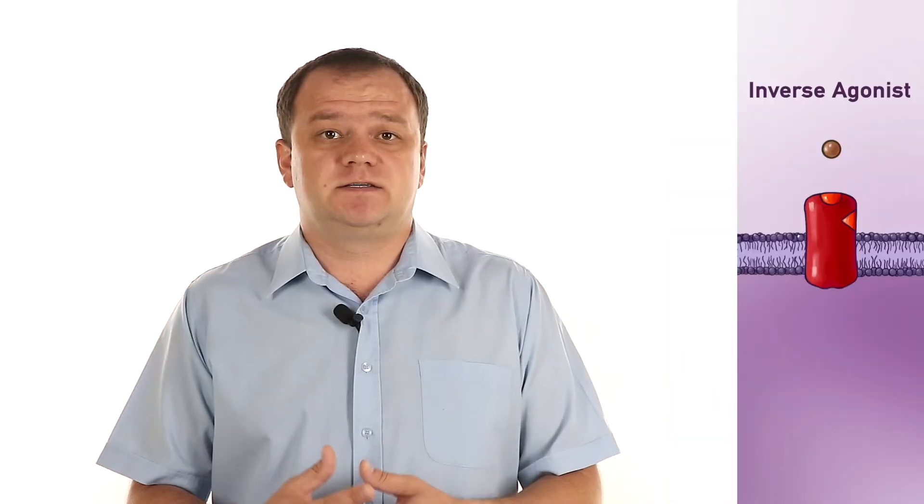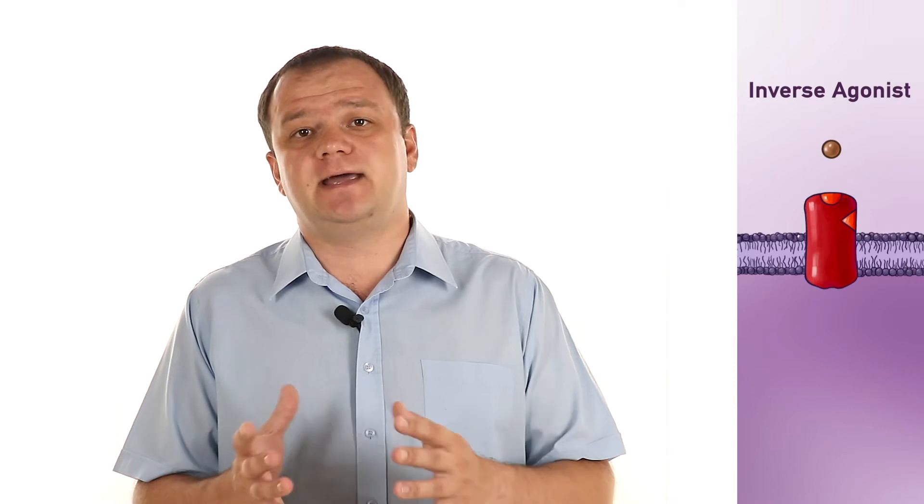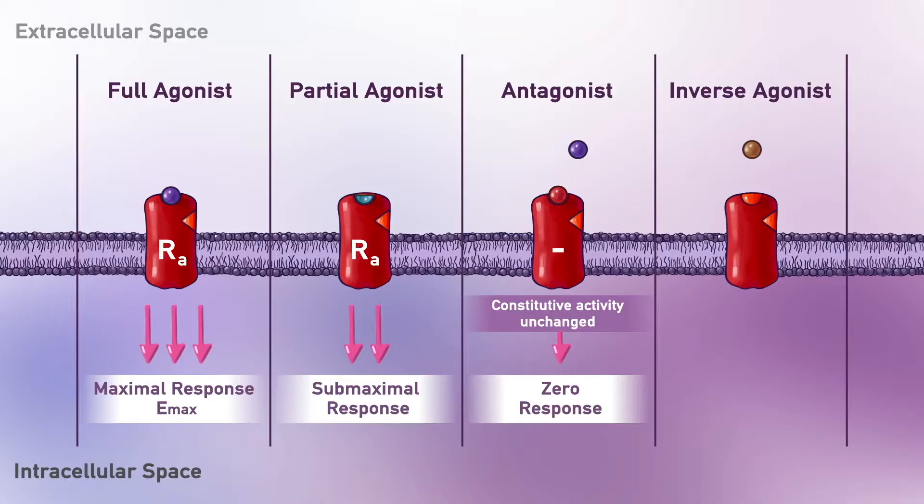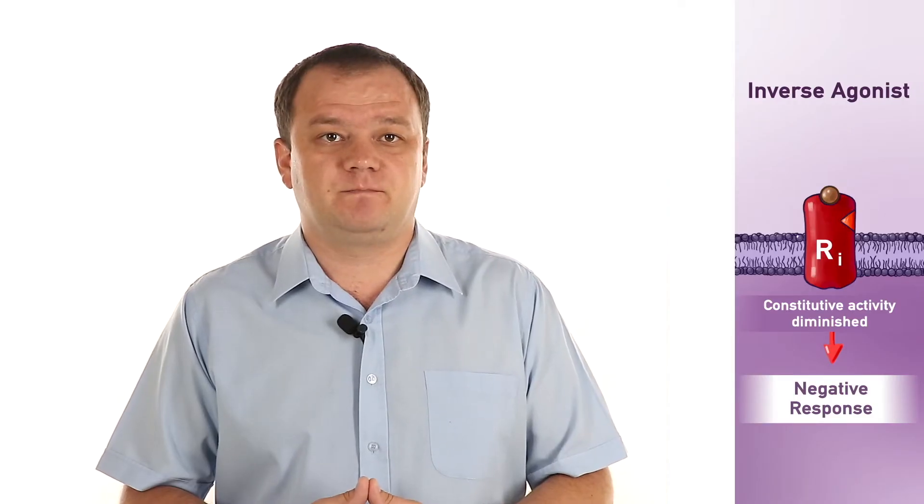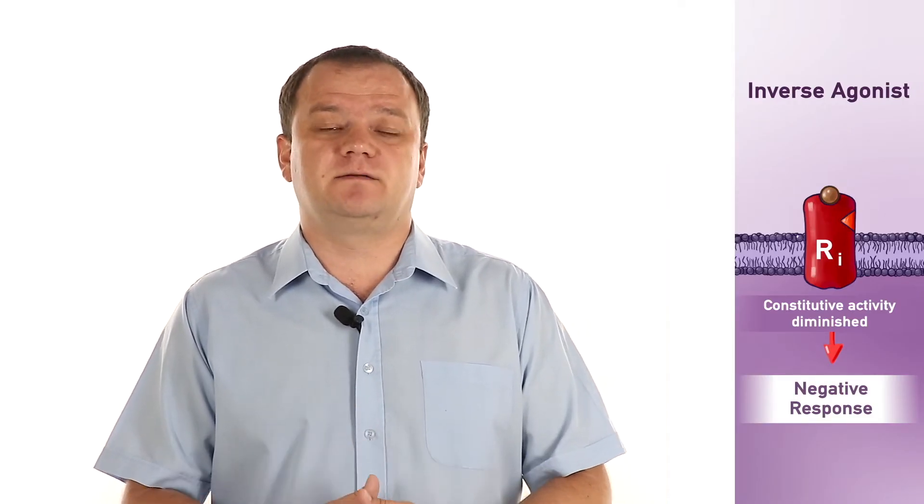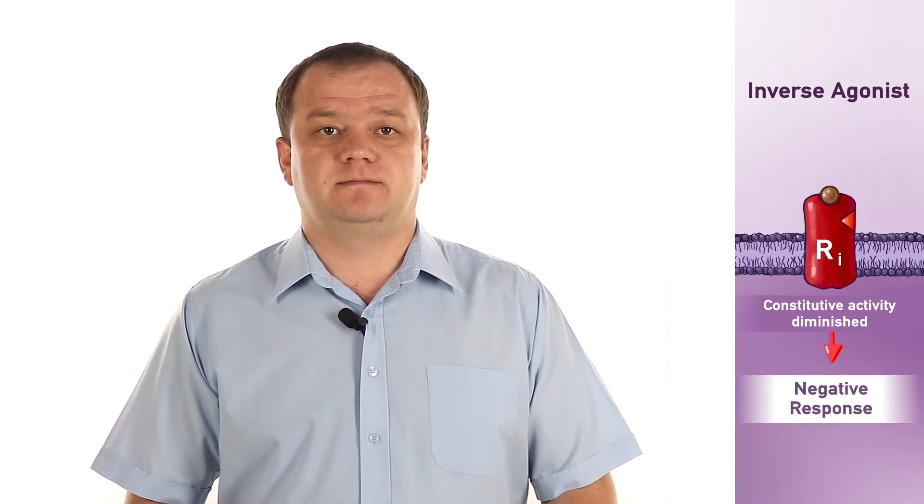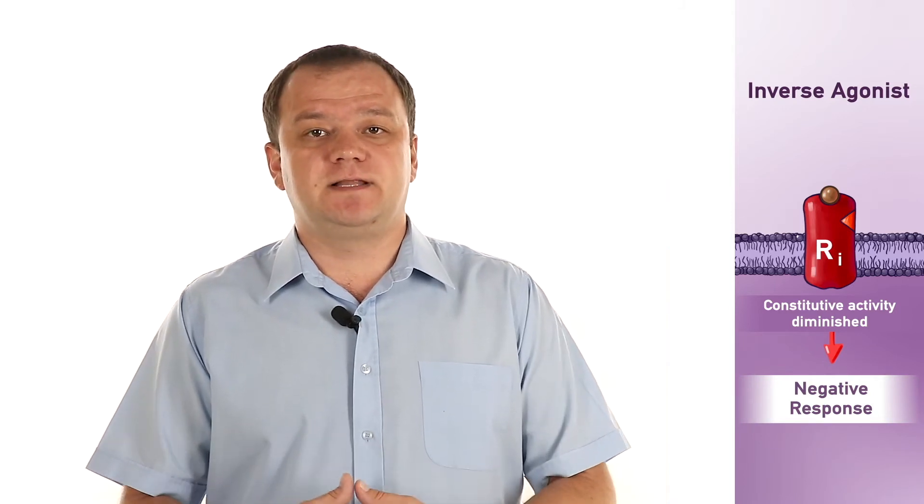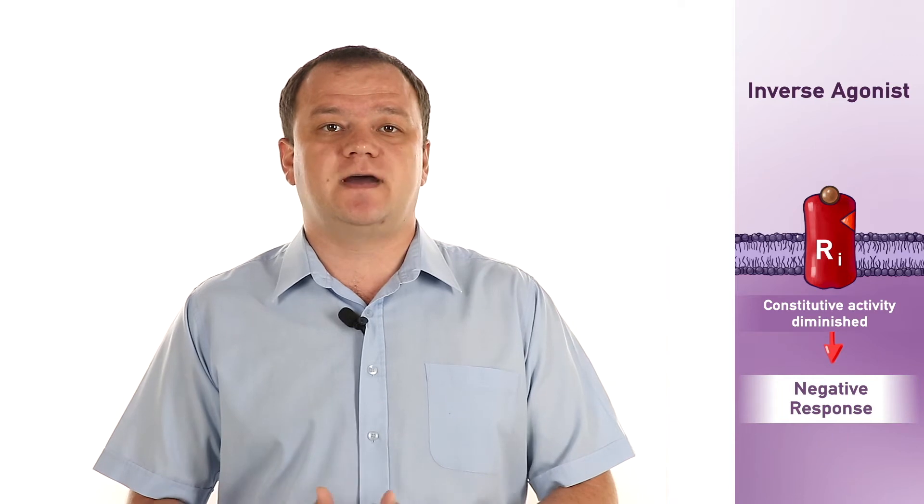But now let's come back to constitutive activity of receptors. Constitutive activity means that even in the absence of ligands, receptors exert activity. In the absence of ligands, they are doing transitions between active and inactive states. Inverse agonists are drugs binding to a receptor that is active also in the absence of ligand. Inverse agonists reduce the probability of the receptor to be in its active state and induce a pharmacological response opposite to that of an agonist. Inverse agonists stabilize the receptor at inactive state and reduce constitutive activity of this receptor.